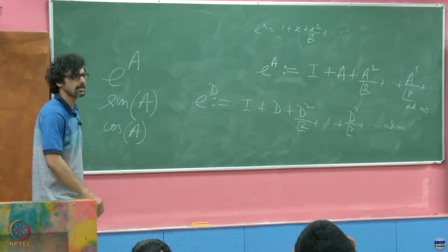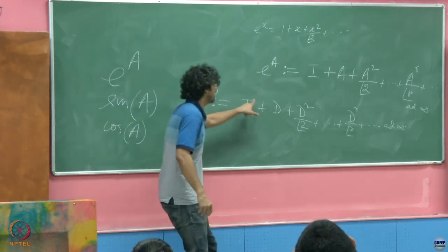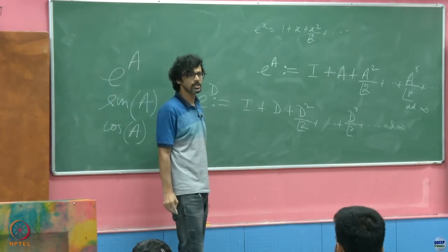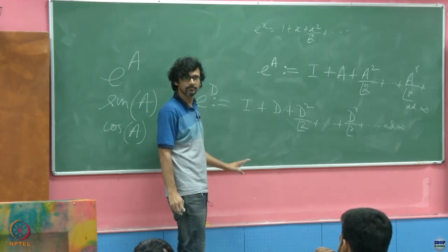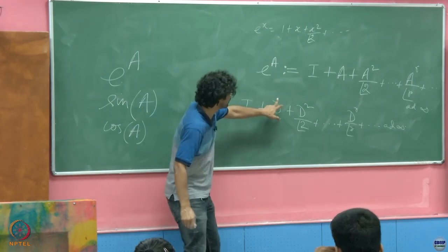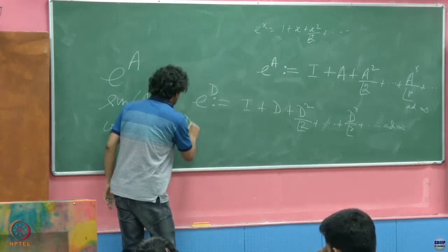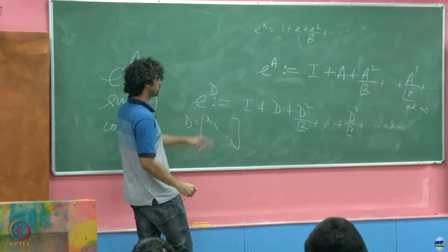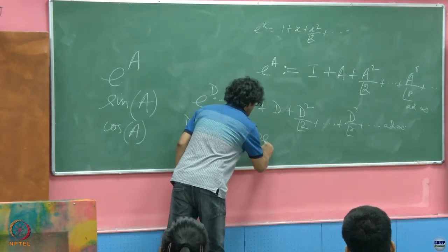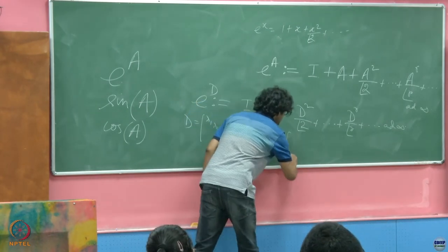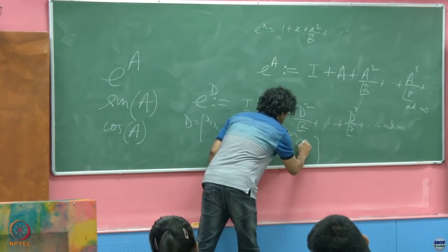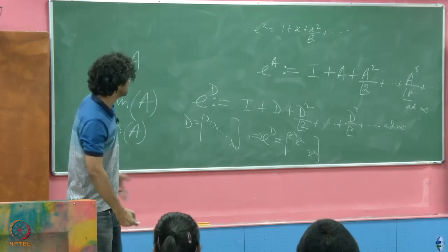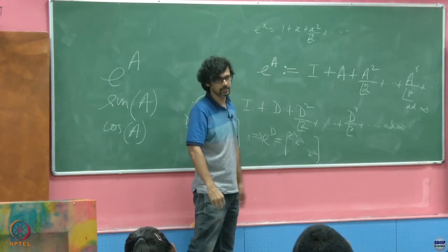Each individual entry is easy to see. If I know D is a diagonal matrix with entries λ₁, λ₂, ..., λₙ, what is e^D going to be? e^D is simply e^(λ₁), e^(λ₂), ..., e^(λₙ) on the diagonal. Beautiful, is it not? The point is: how do I get from a general A to a diagonal D, and what is the relation?